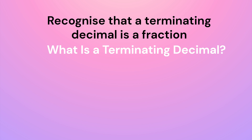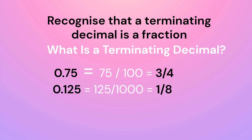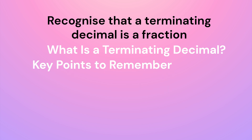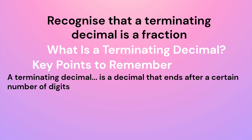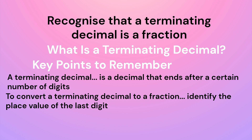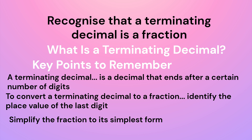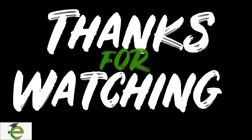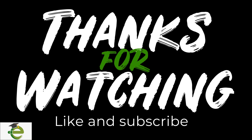Key points: A terminating decimal is a decimal that ends after a certain number of digits. To convert a terminating decimal to a fraction, identify the place value of the last digit, then simplify the fraction to its simplest form. If you found this helpful, be sure to like, share, and subscribe for more educational content. If you have any questions or topics you'd like us to cover, feel free to leave a comment below.